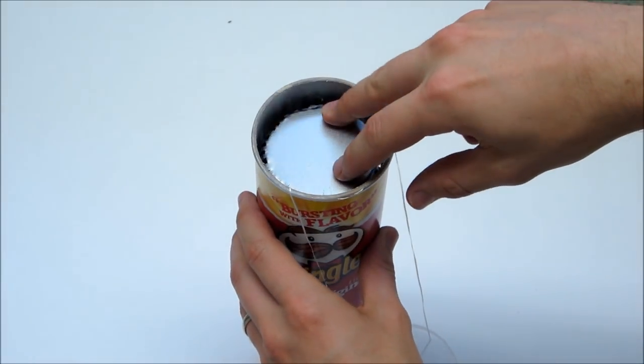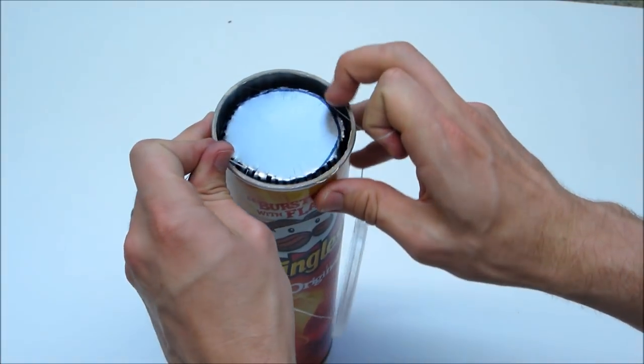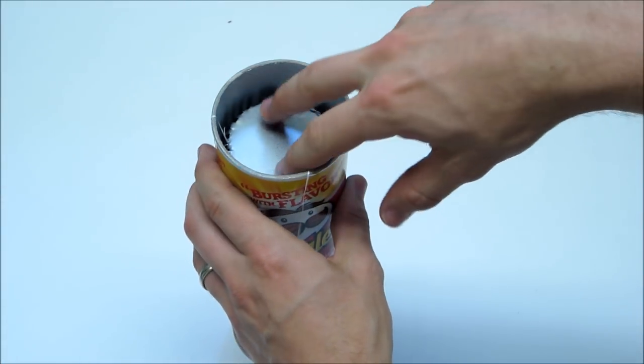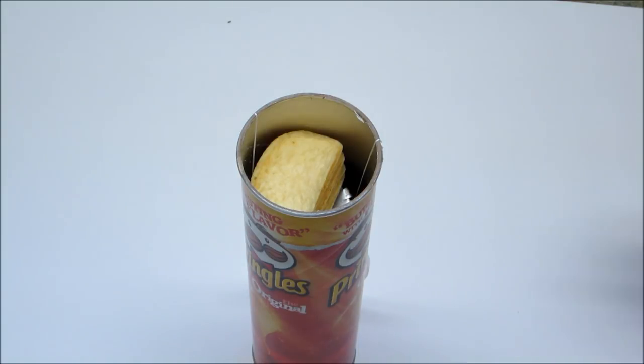Insert the metal platform into the can and slide it to the bottom. If the metal teeth get stuck, just twist the platform clockwise and it should come loose. Then just put the chips back in the can and enjoy.